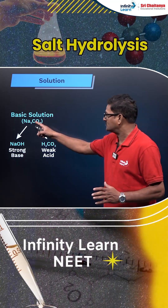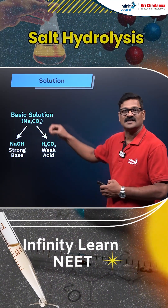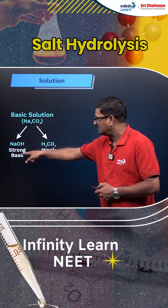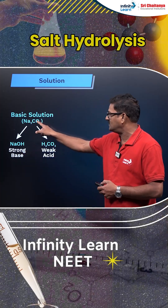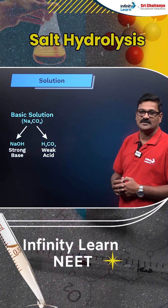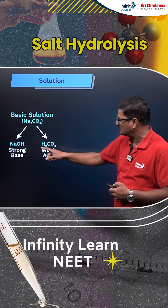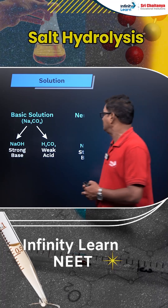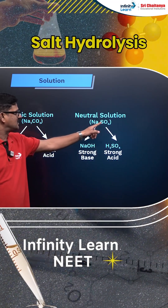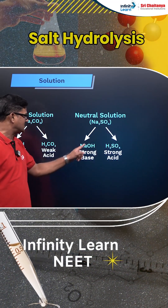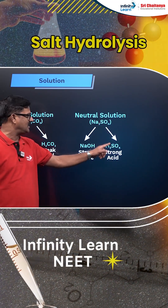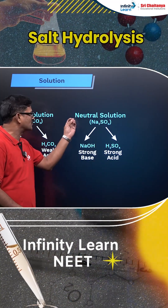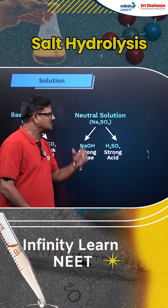For example, sodium carbonate dissolved in water — the cationic part gives rise to a strong base sodium hydroxide, while the anionic part gives rise to a weak acid, so it produces a basic solution. Similarly, sodium sulfate gives rise to a strong base sodium hydroxide and a strong acid H2SO4, so it gives a neutral solution.